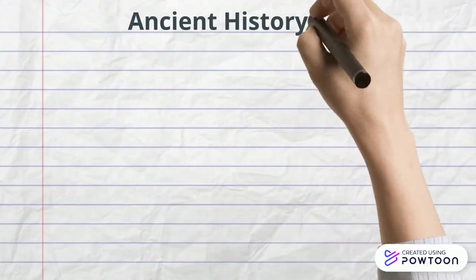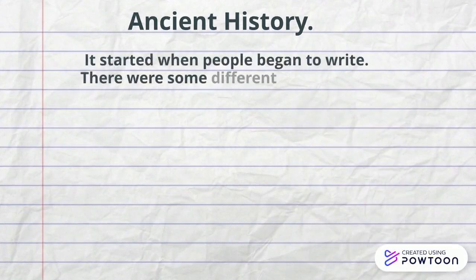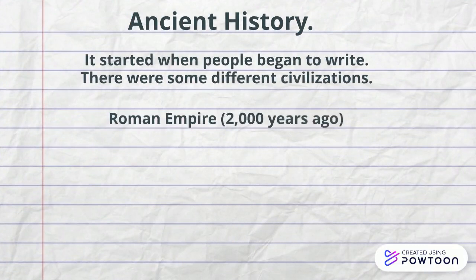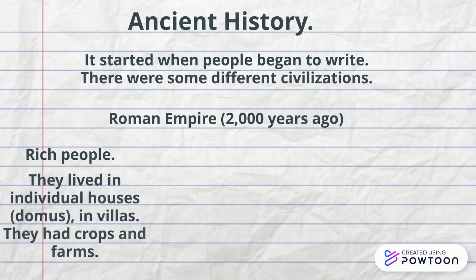Ancient history started when people began to write. There were some different civilizations. The most important one was the Roman Empire over 2,000 years ago. There were three social classes. Rich people who lived in individual houses called domus, in villas, and they had crops and farms.